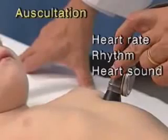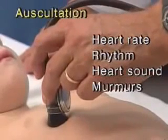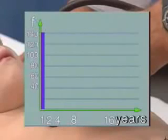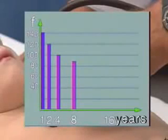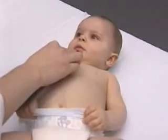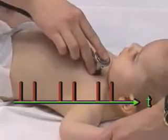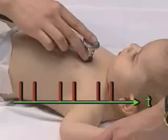During auscultation, note the following: heart rate, rhythm (the regularity of the heartbeat), quality of the heart sounds, and the presence of additional heart sounds, murmurs, or clicks. The heart rate changes with age: in the first year of life it is about 140 beats per minute, in the second year 120, in the fourth 100, in the eighth 90, and towards the end of puberty the heart rate approaches that of an adult. When listening to heart sounds, note their intensity, possible splitting, and whether there are additional sounds such as a third or fourth heart sound.